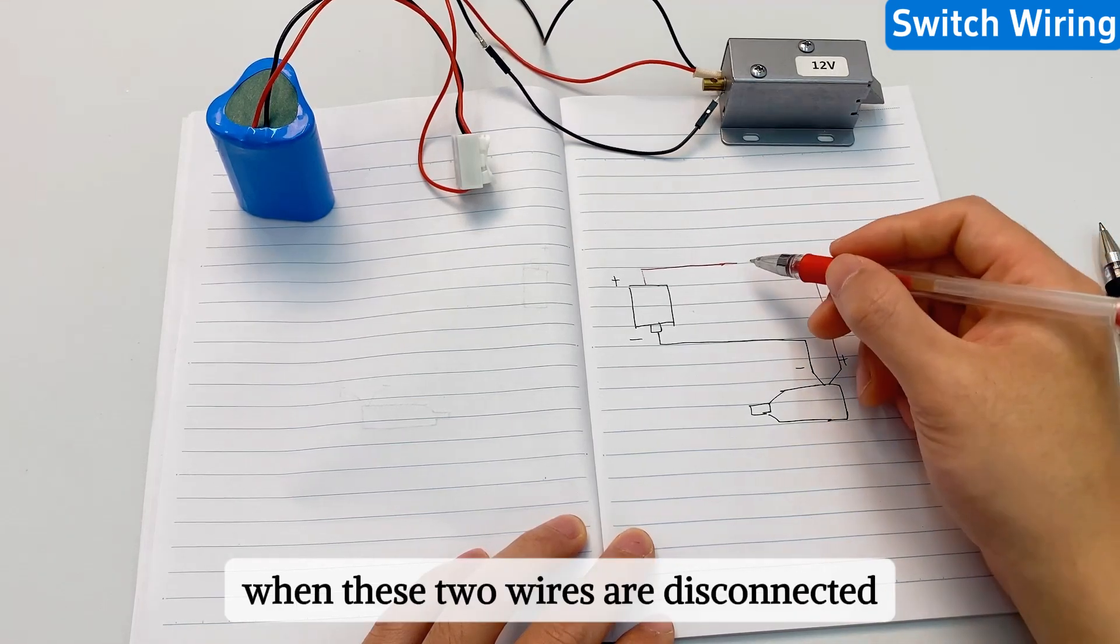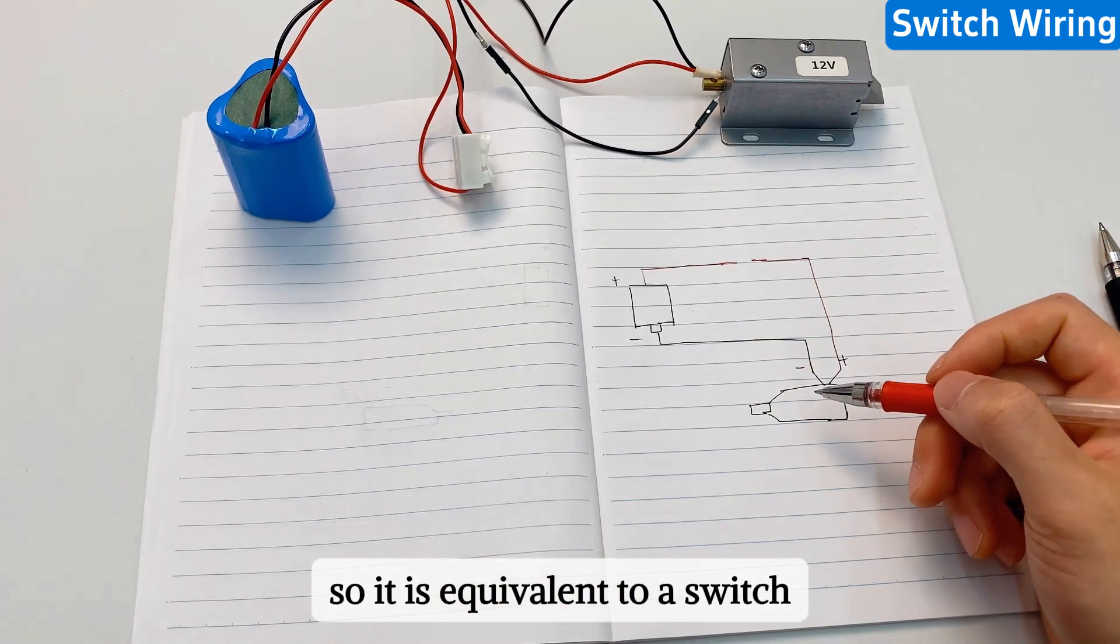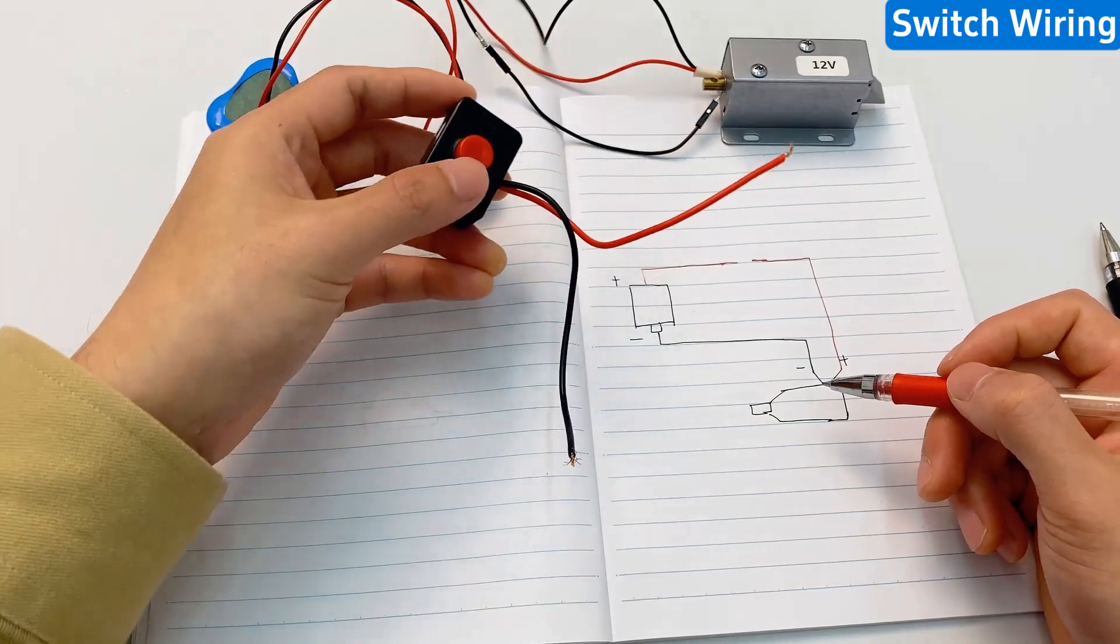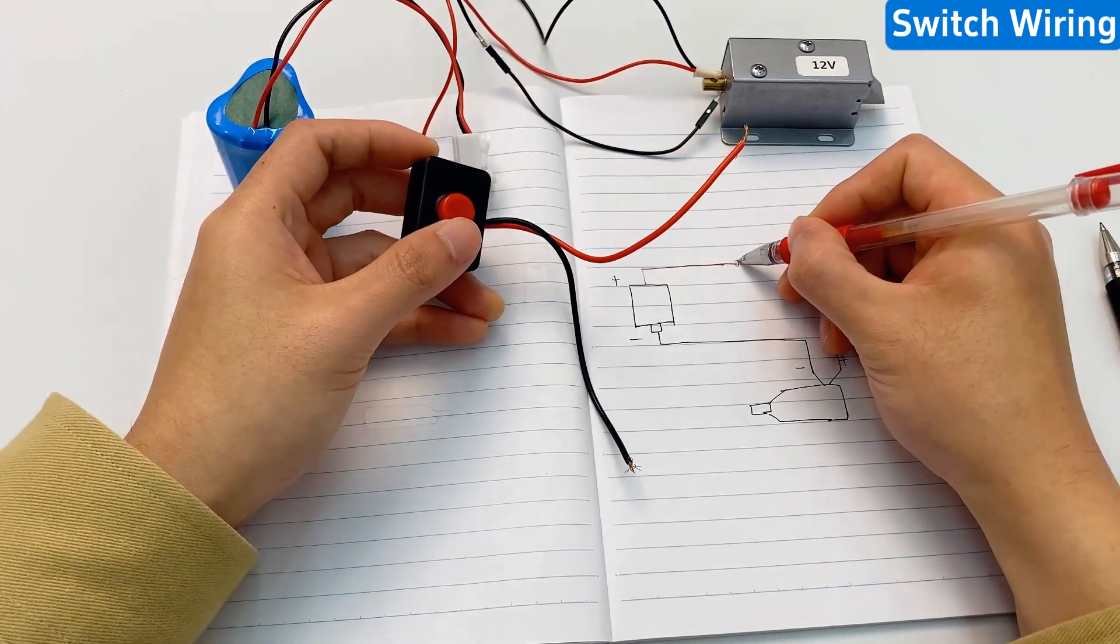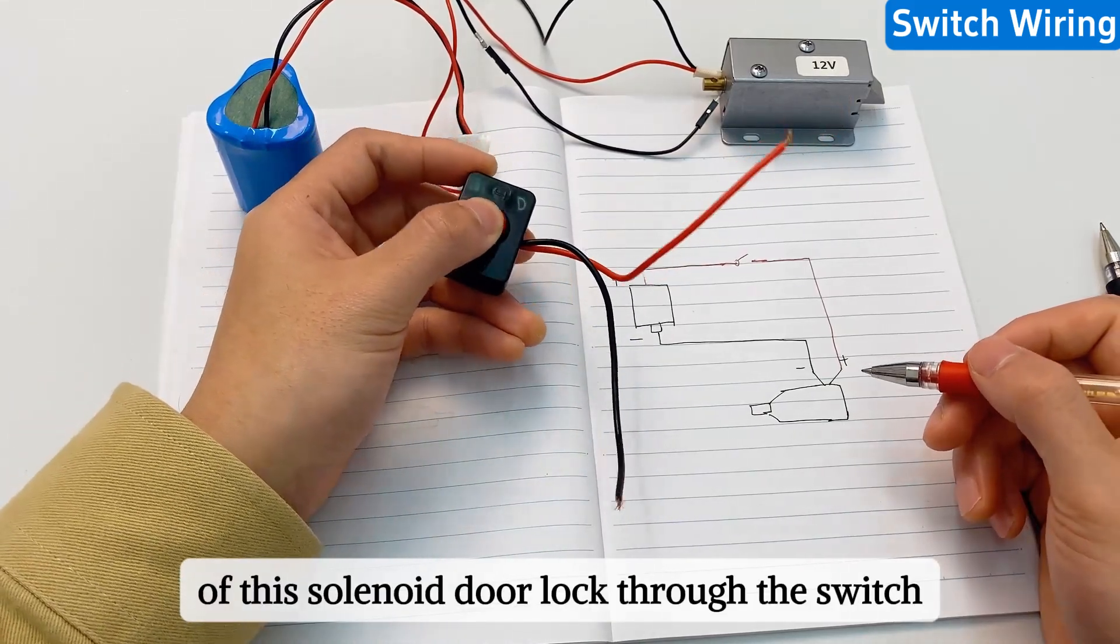When these two wires are disconnected, the solenoid door lock will close. So it is equivalent to a switch. Let's draw a switch here. We can control the opening and closing of this solenoid door lock through the switch.